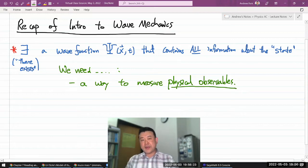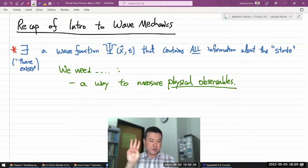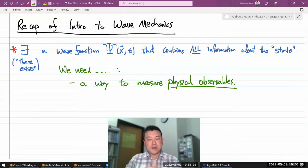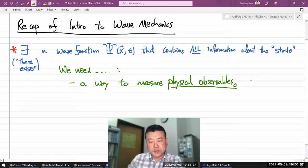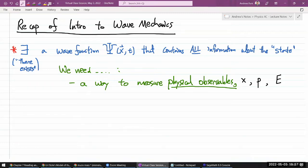At this point in the game, we really only need three basic observables. Once we can measure those three, all other quantities can be constructed from them. Those three physical observables are: position, momentum of the state, and energy of the state.